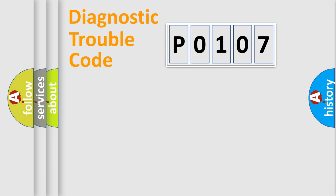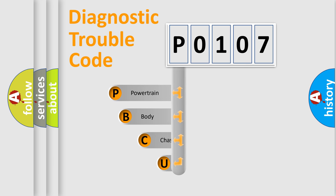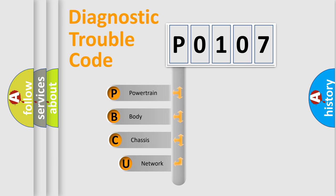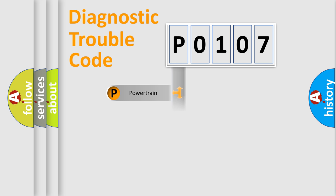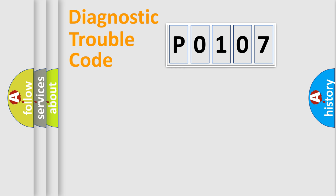Let's do this. First, let's look at the history of diagnostic fault code composition according to the OBD2 protocol, which is unified for all automakers since 2000. We divide the electric system of automobile into four basic units: Powertrain, Body, Chassis, and Network.